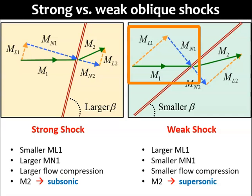But even though Mn1 is now smaller than the previous strong shock case, it is by itself still supersonic. Otherwise, it won't be able to produce any oblique shock.